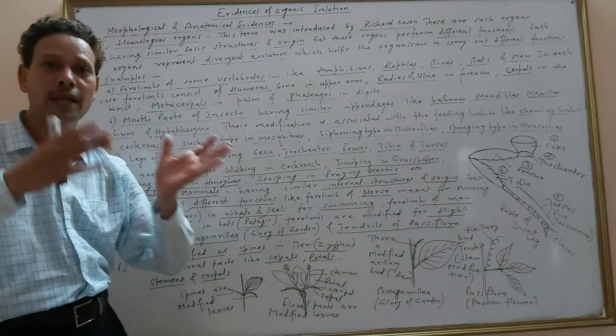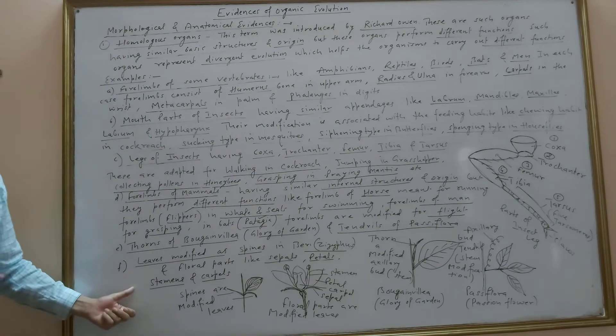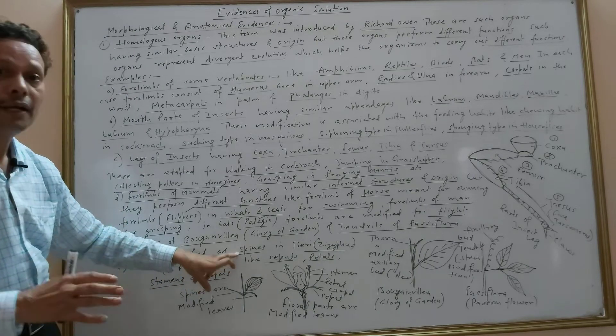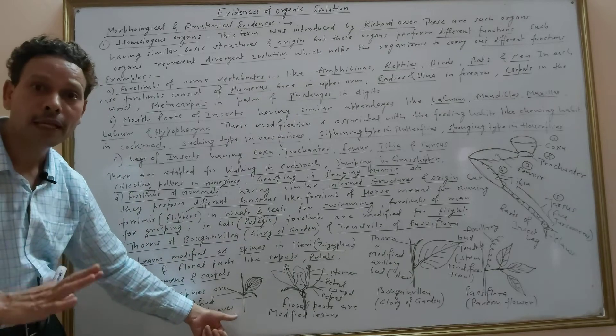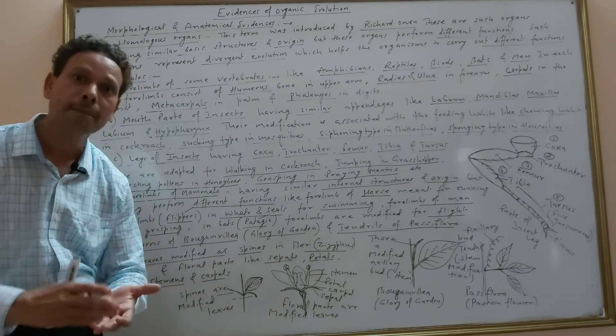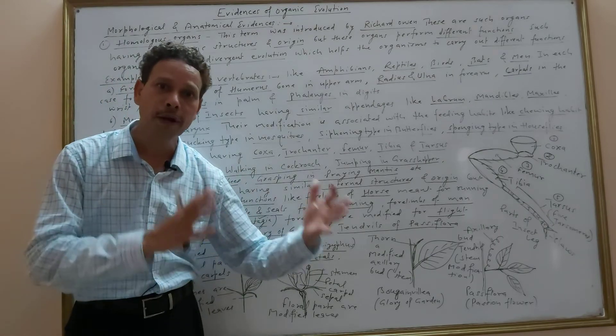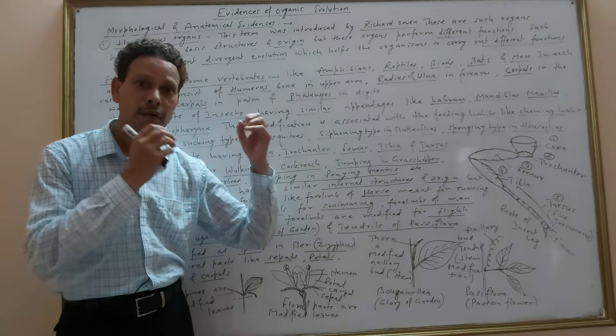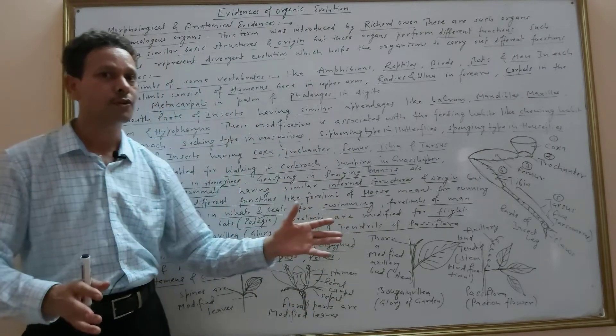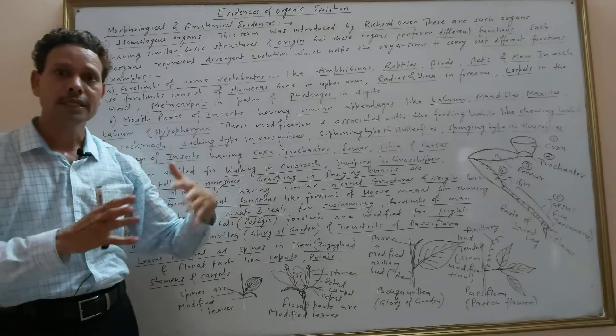Another example of homologous organs: leaves modified as spines in case of Opuntia or Berberis. All floral parts whether sepals, petals, stamens, or carpels are modified leaves but they perform different functions. Anatomically, from origin point of view, these are similar structures but perform different functions. So this topic was homologous organs.